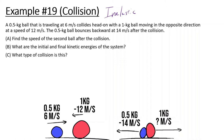A 0.5kg ball traveling at 6 meters per second collides head-on with a 1kg ball moving in the opposite direction at a speed of 12 meters per second. The 0.5kg ball bounces backwards at 14 meters per second after the collision. Find the speed of the second ball after the collision. So we're looking for the speed of this second ball after they have collided.